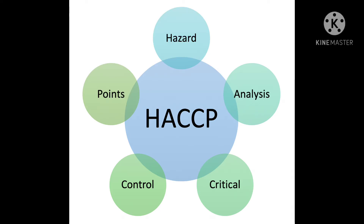HACCP, i.e., Hazard Analysis and Critical Control Point, is an internationally recognized system for reducing the risk of safety hazards in food. Hazard analysis is a science-based and systematic process to identify possible danger to health. CCP, i.e., Critical Control Point, is a point, step, or procedure at which control can be applied and a food safety hazard can be prevented, eliminated, or reduced to an acceptable level or limit.